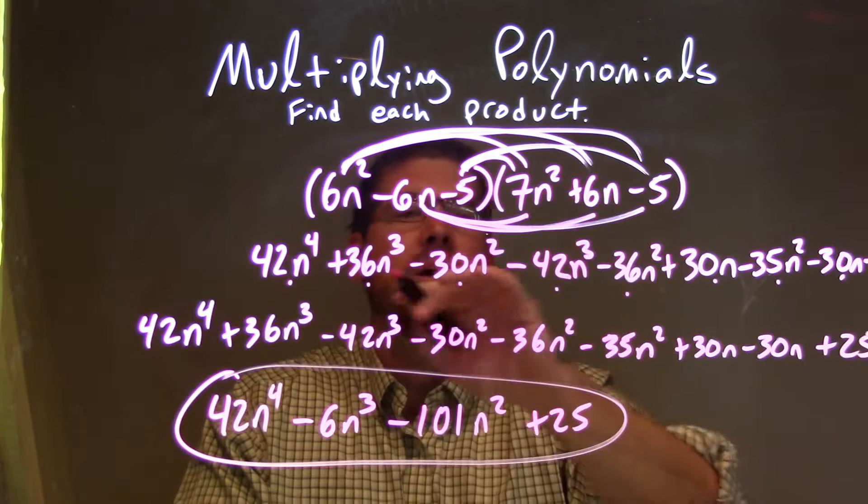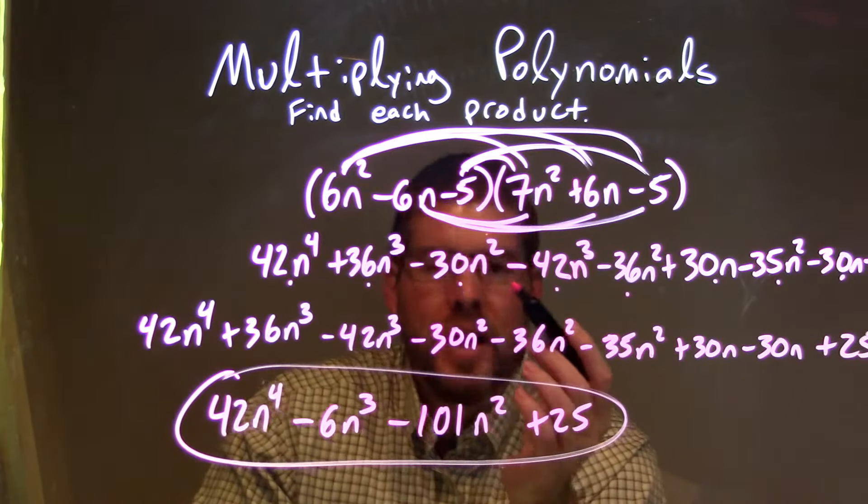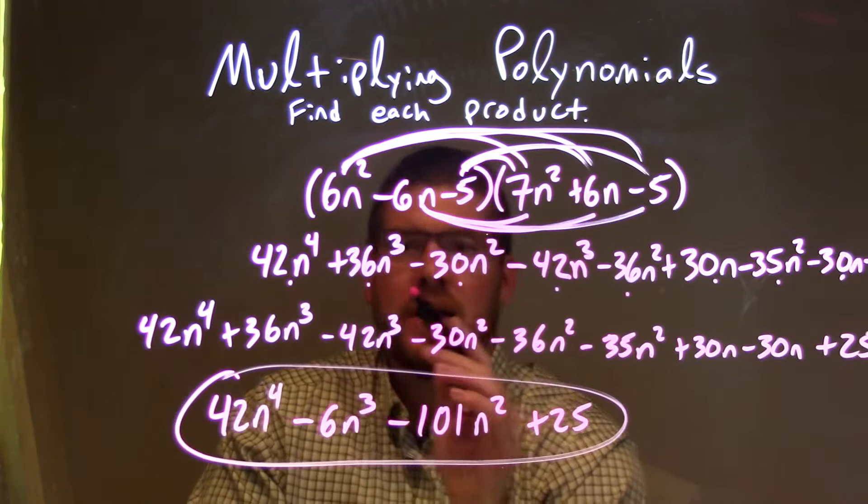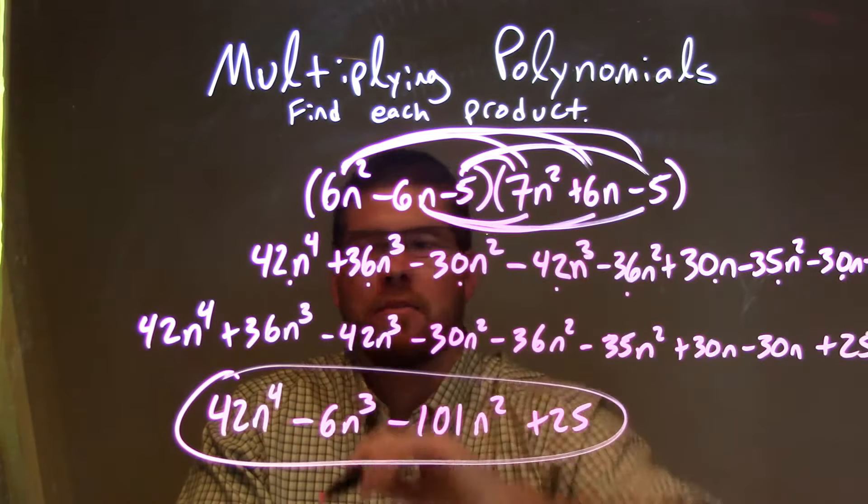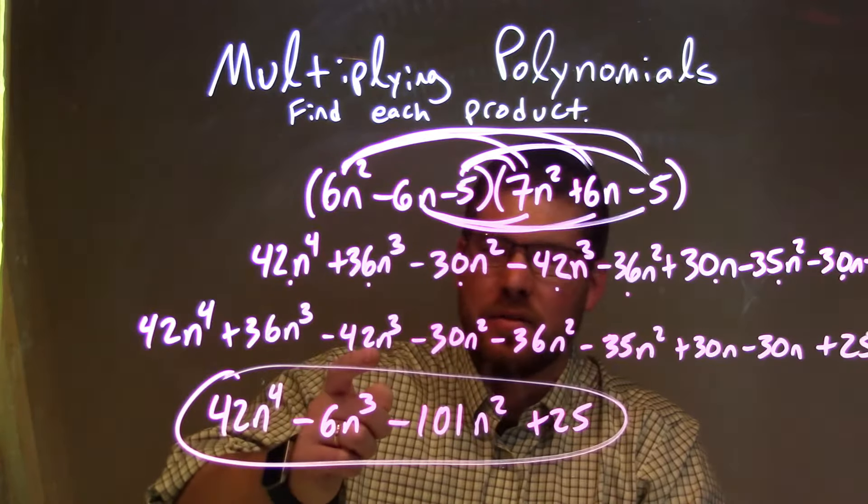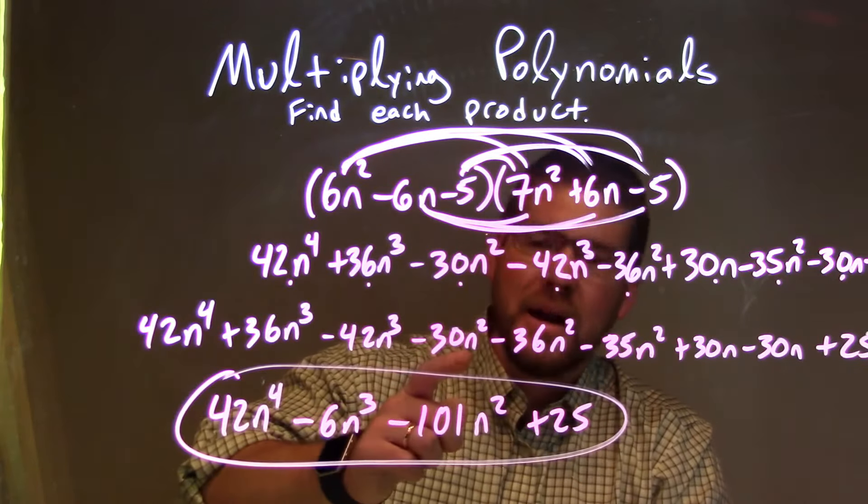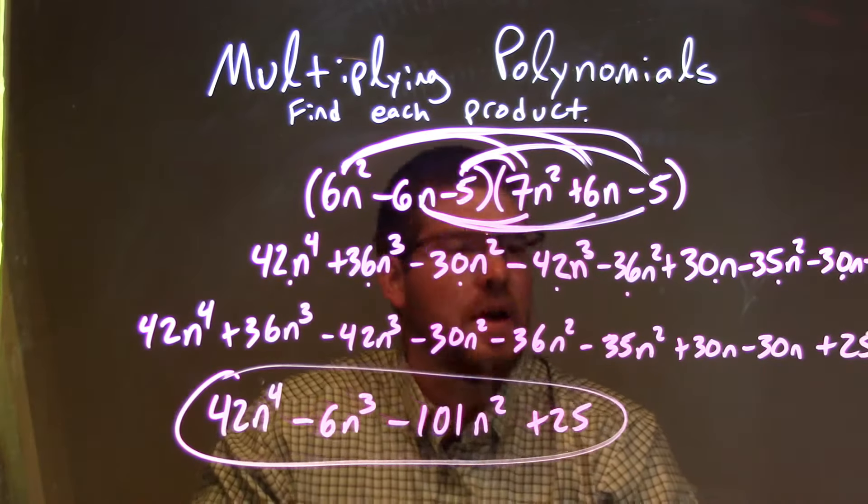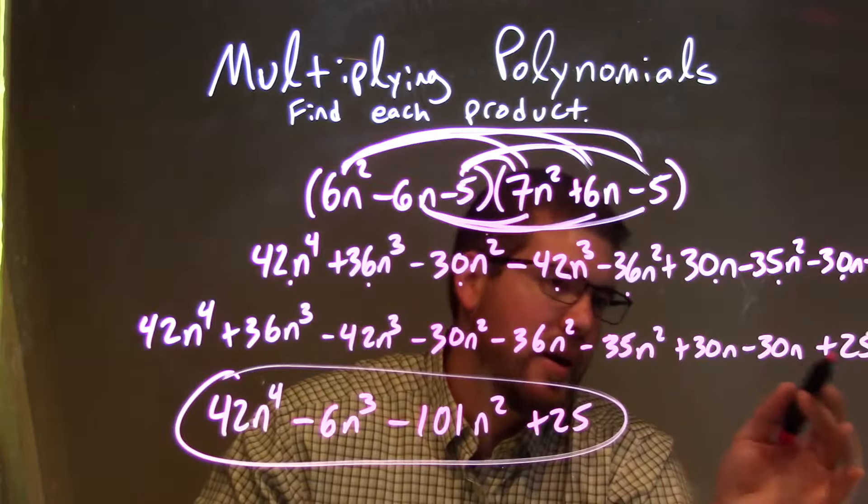So now I've rearranged putting my like terms together and my highest degrees first, and I used the dot method to make sure I brought everything down. We got 42n to the fourth, plus 36n to the third, minus 42n to the third, minus 30n squared, minus 36n squared, minus 35n squared, plus 30n, minus 30n, plus 25.